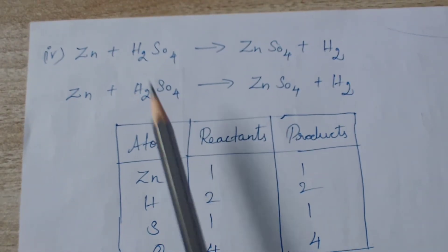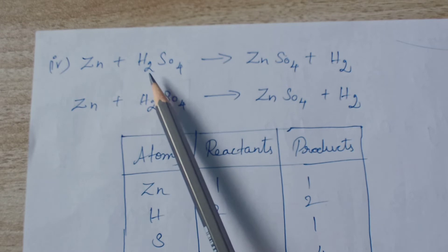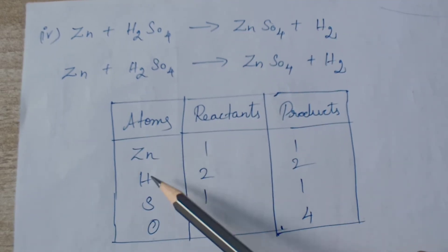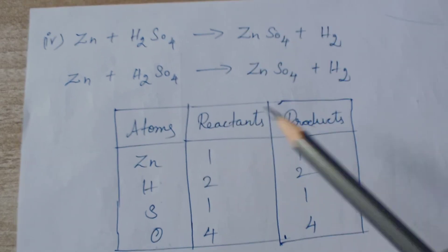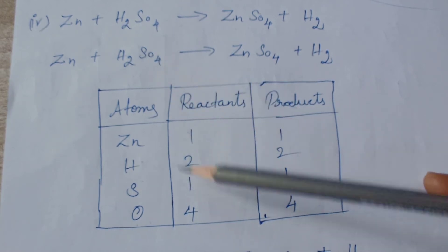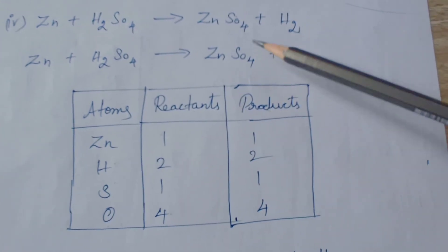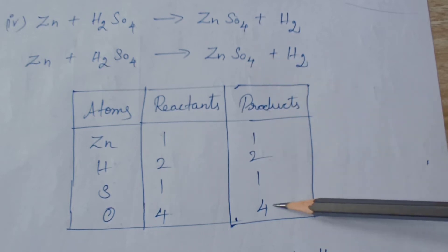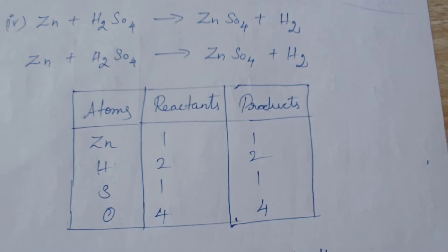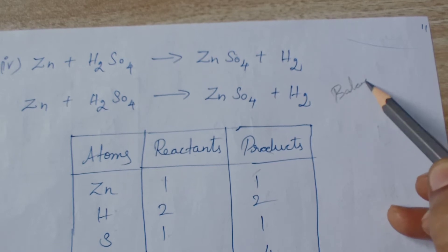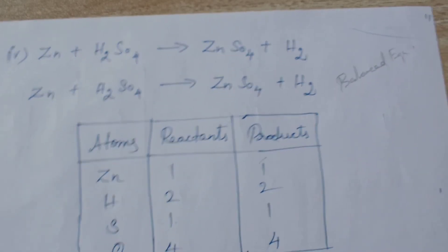Also in the third activity: zinc reacts with sulfuric acid. Zn + H₂SO₄ → ZnSO₄ + H₂. Write the atoms: 1 Zn, 2 H, 1 S, 4 O on the reactant side; and 1 Zn, 1 S, 4 O, 2 H on the product side. Everything is already balanced — 4=4, 1=1, 2=2, 1=1. This itself is a balanced equation; no further balancing needed.